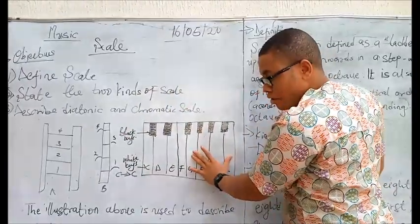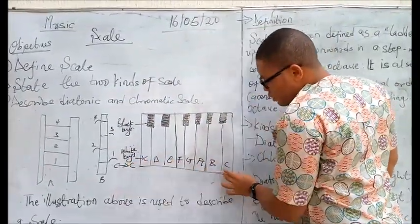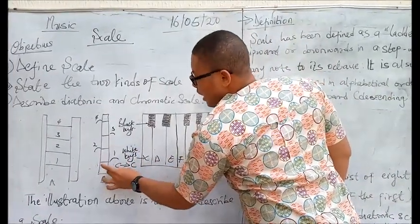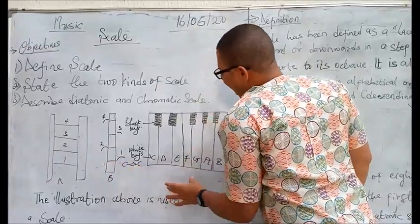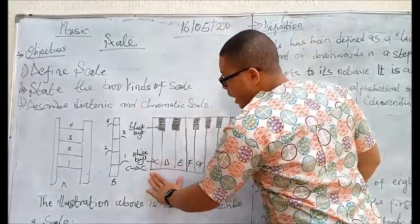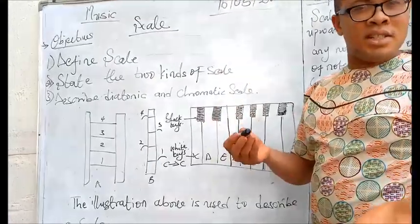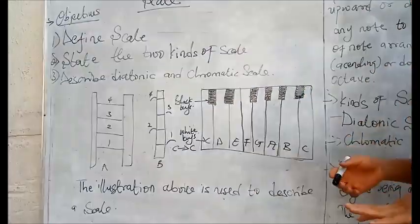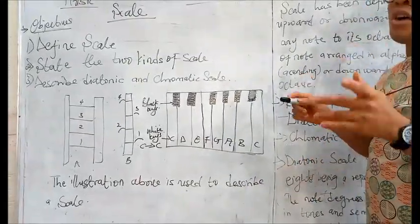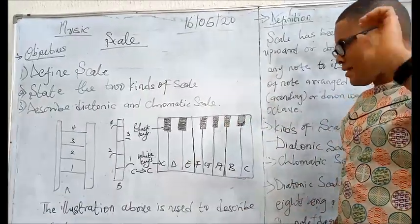As I illustrated with the keyboard you see it's moving from key C to key C, starting from the home key which is C and then moves to its octave. We talked about the tonic which is the first one, the leading note which is the seventh note, and the octave which is the last one but the repetition of the tonic.